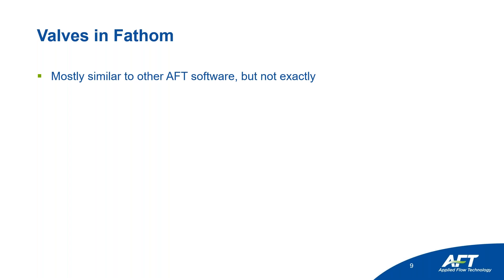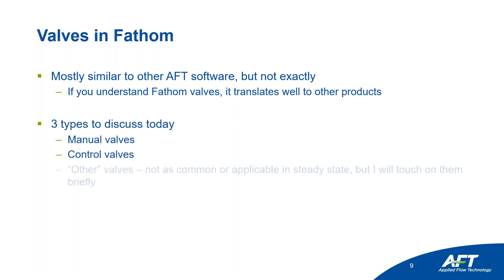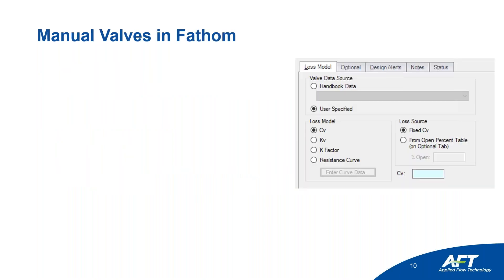AFT Fathom is our incompressible flow, steady-state software — our first product. What you see in Fathom is mostly similar to all AFT software. If you can understand Fathom valves, it's going to translate well into other products. There are three types: manual valves, control valves, and other kinds of valves that are not as common or as applicable in steady state, but I will touch on them briefly.